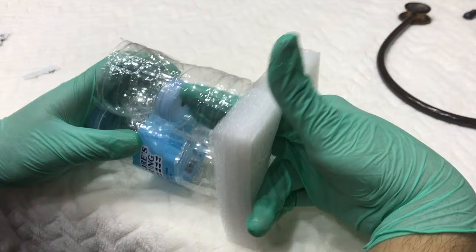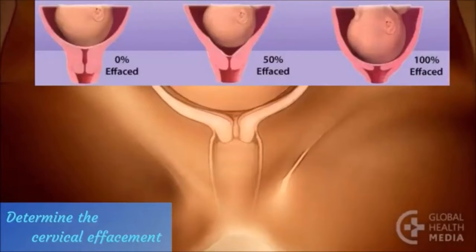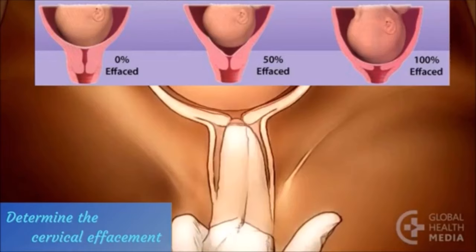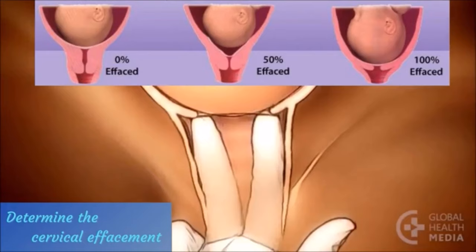Now determine the cervical effacement. The degree of cervical effacement is usually expressed in terms of the length of the cervical canal compared with that of an un-effaced cervix. When the length of the cervix is reduced by one half, it is 50% effaced. When the cervix becomes as thin as the adjacent lower uterine segment, it is completely or 100% effaced.